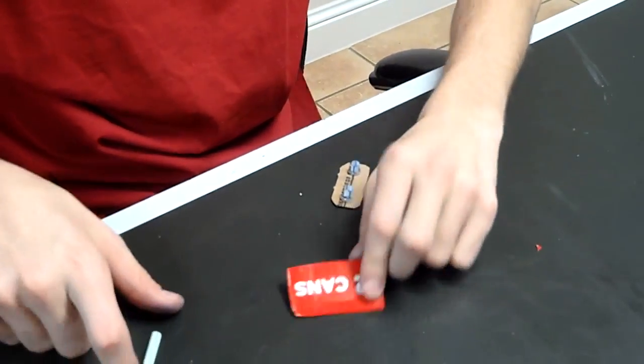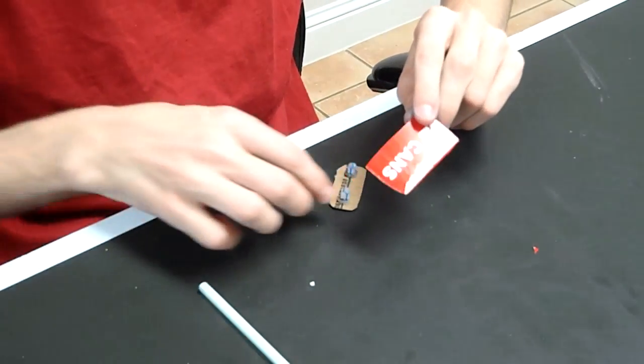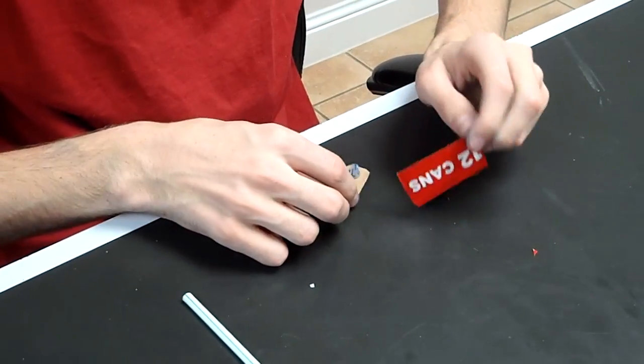You're going to need a straw, a Coke cardboard box or any other cardboard box, and some hot glue.